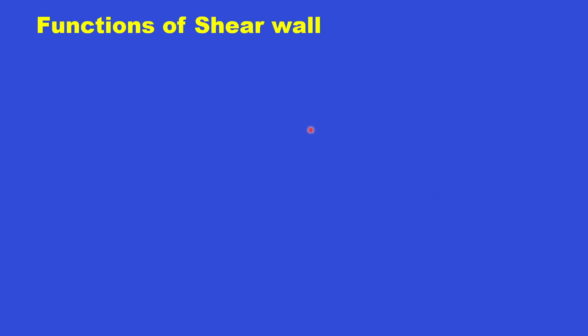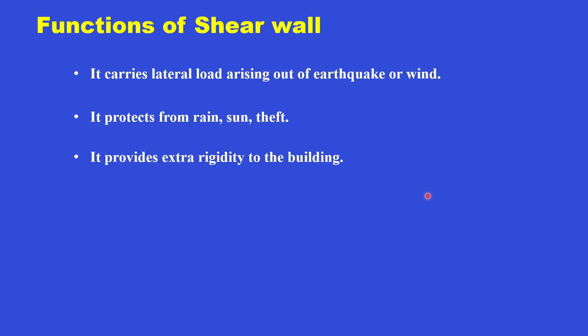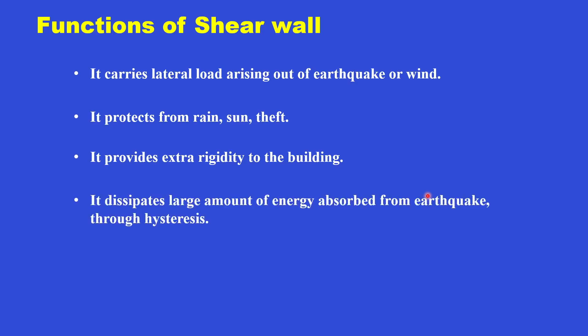Now let us see the functions of the shear wall. It carries lateral load arising out of earthquake or wind. It protects the building from rain, sun, and theft. It provides extra rigidity to the building, which reduces deflection and thereby eliminates damage. It also dissipates a large amount of energy absorbed from the earthquake through hysteresis.